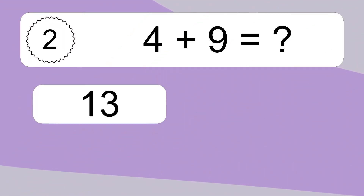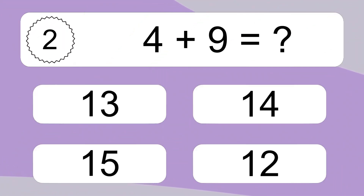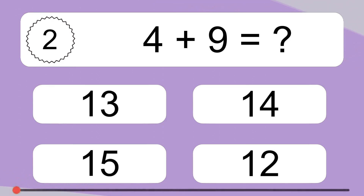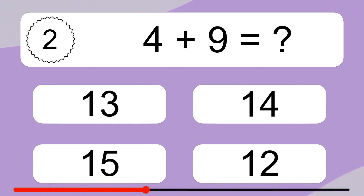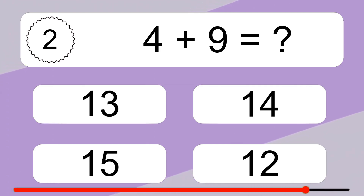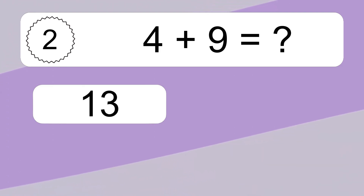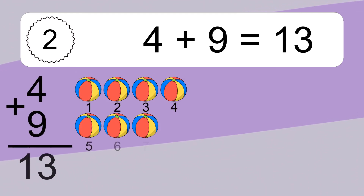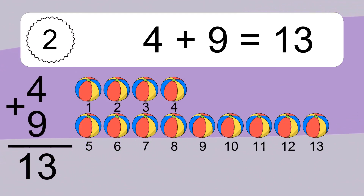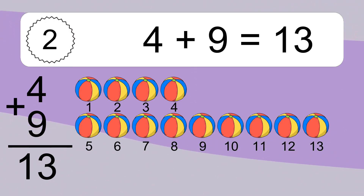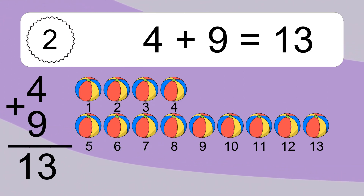4 plus 9 equals what? 4 plus 9 equals 13. Let's count it. 1, 2, 3, 4, 5, 6, 7, 8, 9, 10, 11, 12, 13.